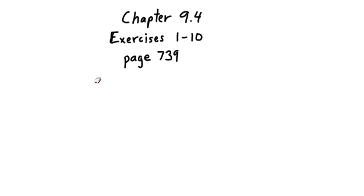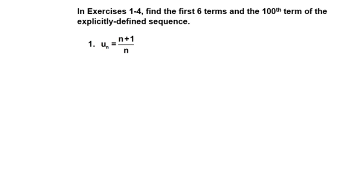Chapter 9.4, Exercise 1-10, page 739. What we have here is really Section 9.4, and that is the section of the book that has to do with sequences. In exercise 1-4, find the first six terms and the 100th term of the explicitly defined sequence.